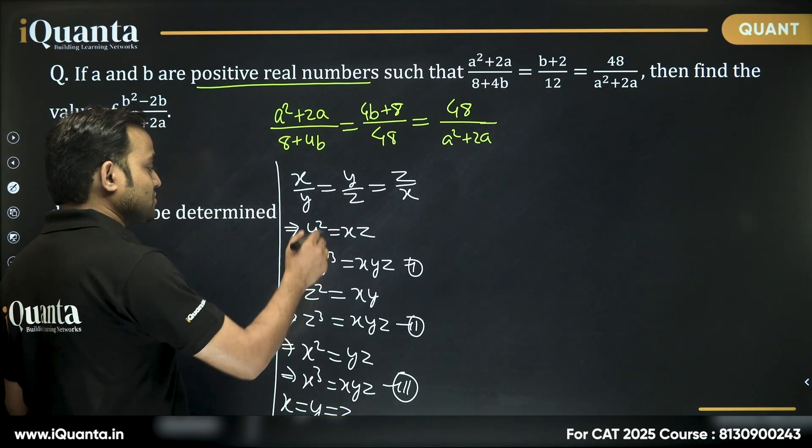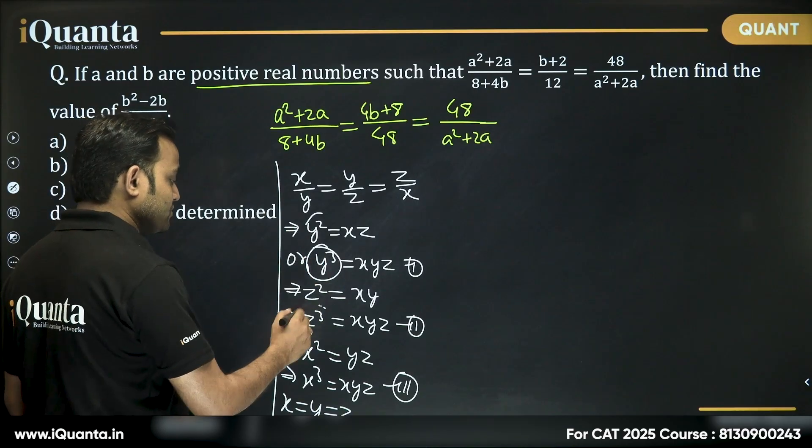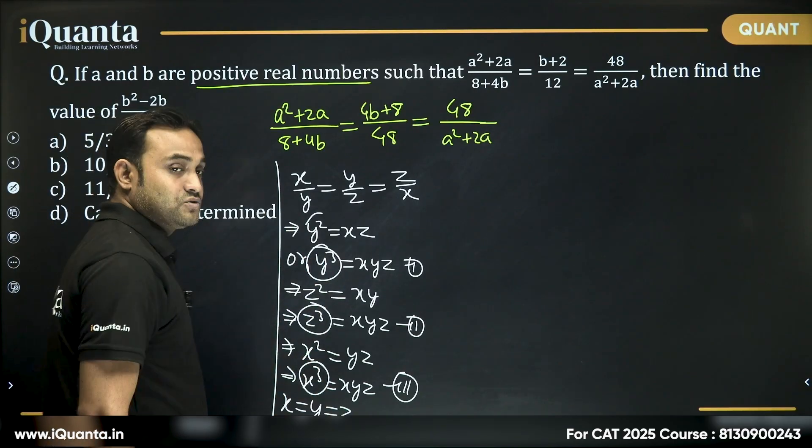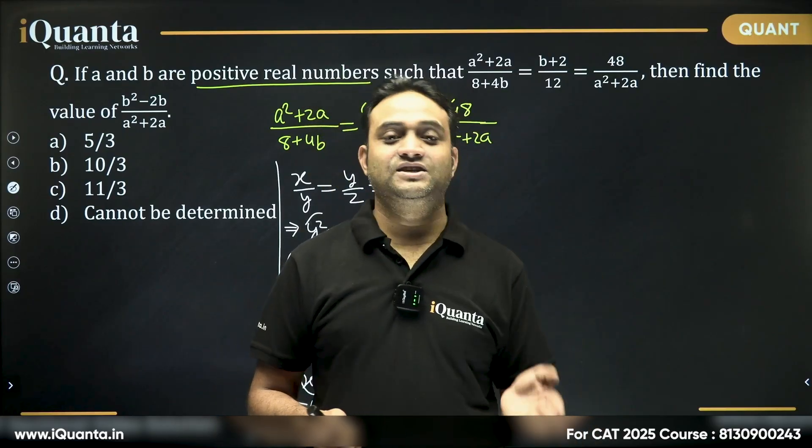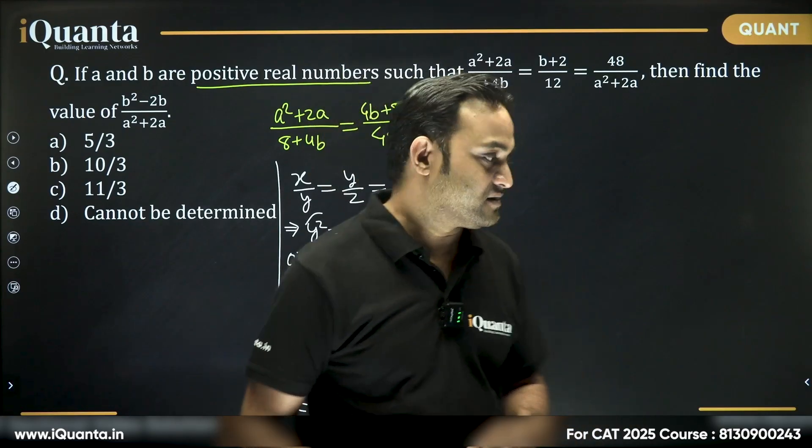Why? Because y³ will be equal to z³ will be equal to x³. So x³ is equal to y³ is equal to z³. That means x is equal to y is equal to z. Right.